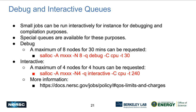For debugging or interactive work, there are two different queues. The debug queue has a maximum limit of 8 nodes with a maximum time of 30 minutes — appropriate for typical short debug sessions. The interactive queue is for longer interactive work, like building a complex code. The difference is in time, number of nodes, and how you submit: debug queues can be accessed through an sbatch script, while interactive always goes through salloc since it is interactive. More information is available at the provided hyperlink.